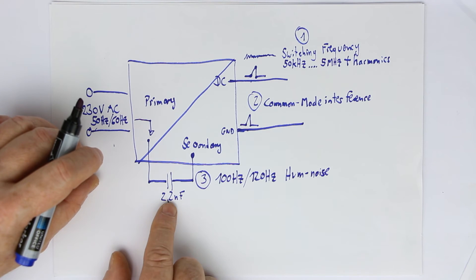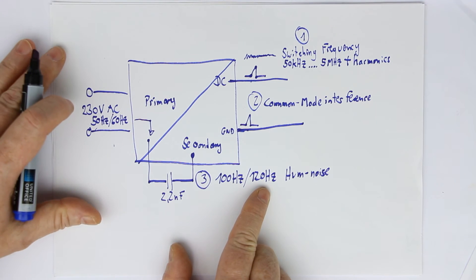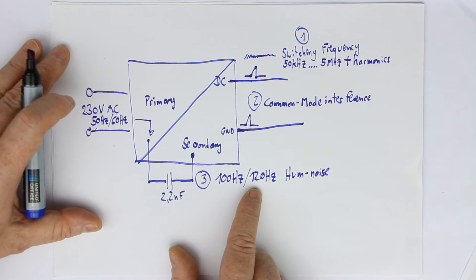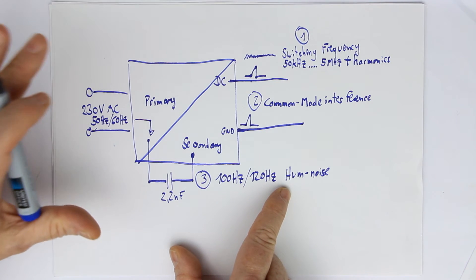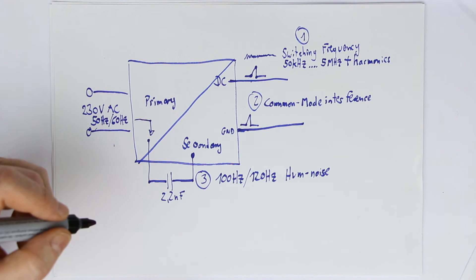And many of the switch mode power supplies you can buy do have such a capacitor. This hum is relatively difficult to filter out because of its low frequency. You might remember that a capacitor or inductor to filter out hum has to be bigger the lower the frequency is. That's not very convenient because we'll later see we need sometimes even more than 1000 microfarads to at least partially filter out this noise.